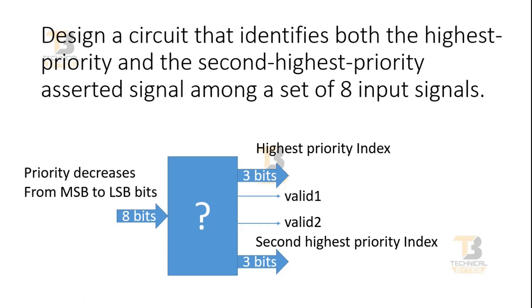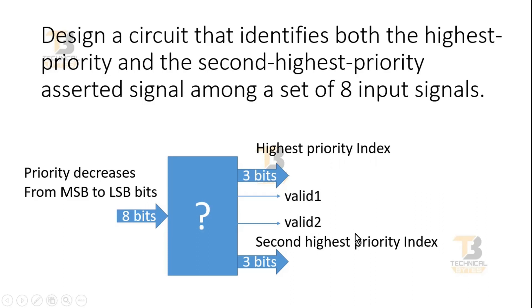At any point of time, any number of inputs from these 8 input signals can be in an asserted position and others will be in a de-asserted position. Depending on the status of the input signals, you have to give 2 outputs. The first one is the highest priority index, which represents a bit among the asserted input bits having the highest priority. The other output should be the second highest priority index, representing a second highest priority index among the asserted input bits. Along with these, you have to give 2 valid signals — Valid 1 responds to the highest priority index and Valid 2 responds to the second highest priority index.